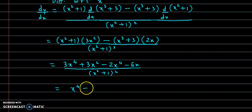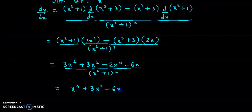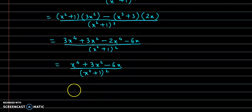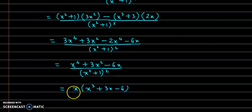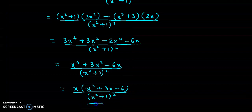So we have 3x raised to 4 minus 2x raised to 4, giving x raised to 4 plus 3x square minus 6x, divided by x square plus 1 the whole square. From the numerator we can take x as a common factor, so in the bracket we get x cube plus 3x minus 6, divided by x square plus 1 the whole square. This is the value for dy by dx.